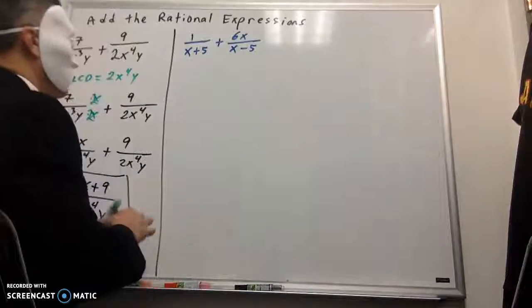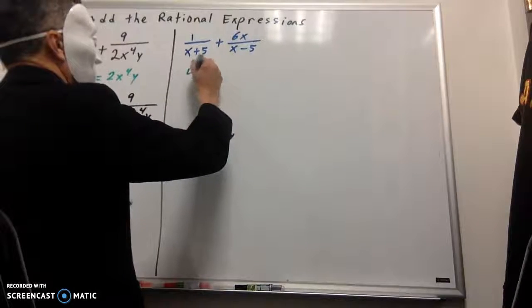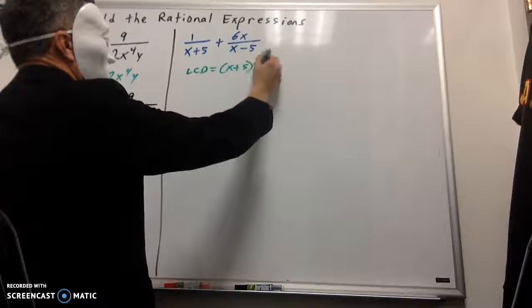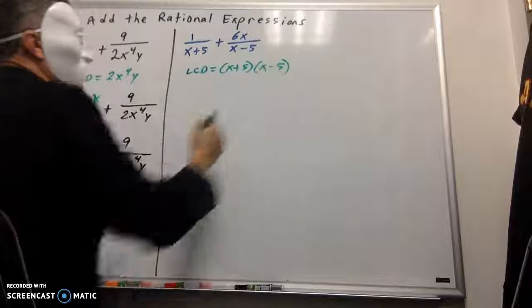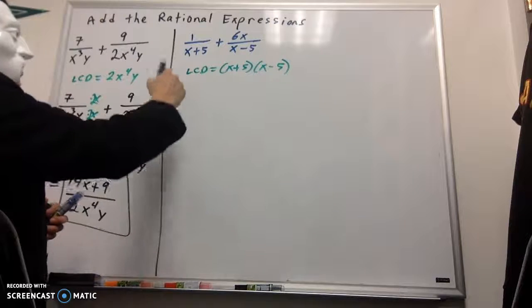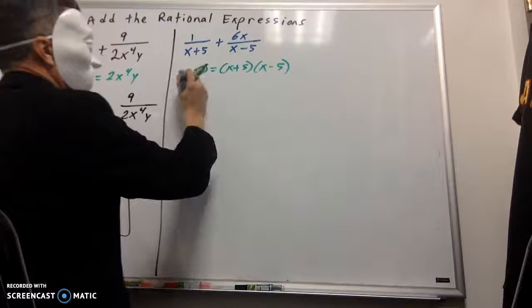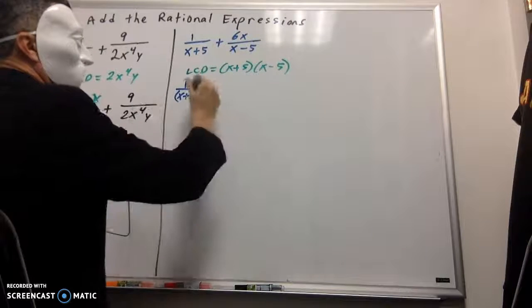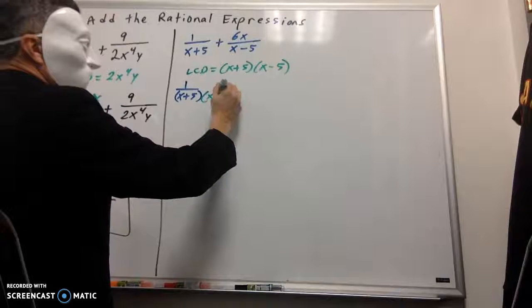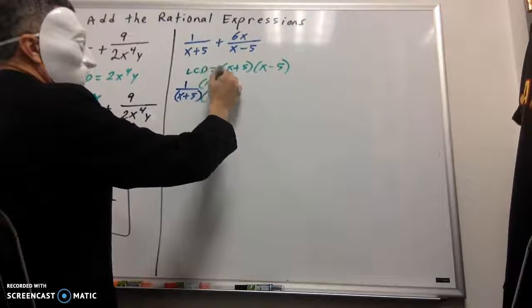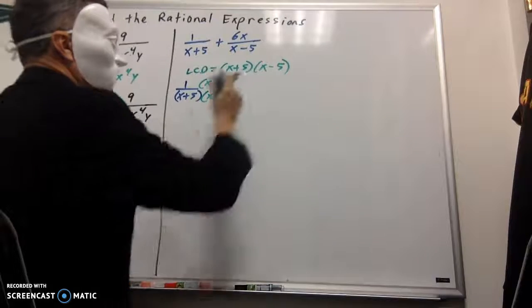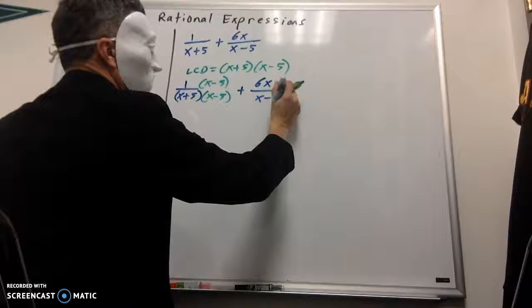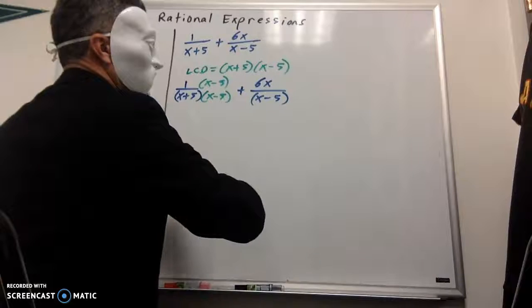My least common denominator this time is going to be x plus 5 and x minus 5, right? So I'm going to multiply the first fraction, top and bottom, by the x minus 5 because it's missing, right? And my second one? I'm going to multiply top and bottom there by an x plus 5 because that's what's missing.